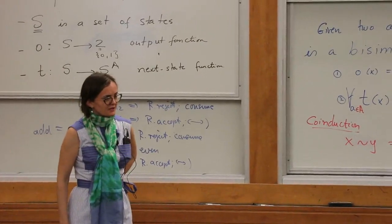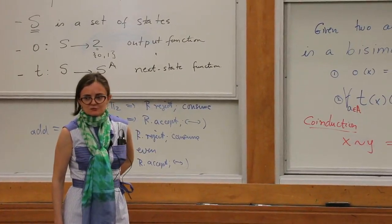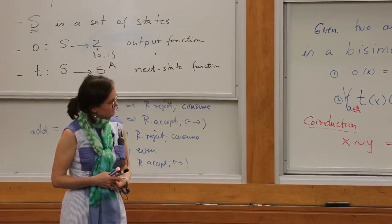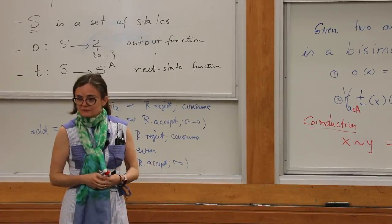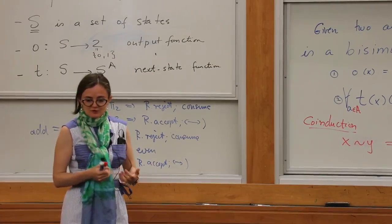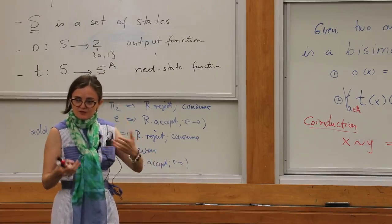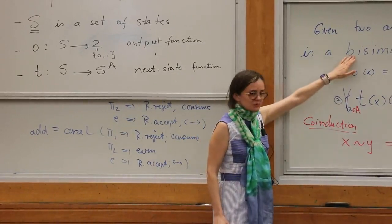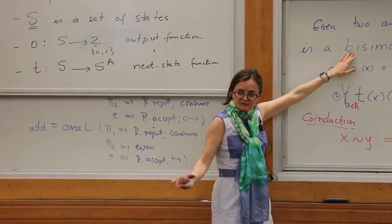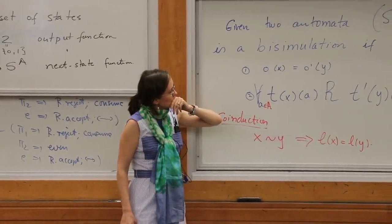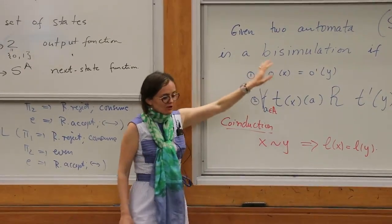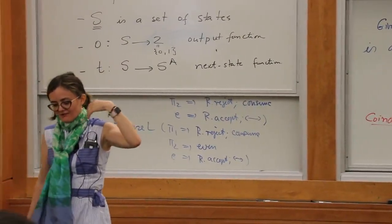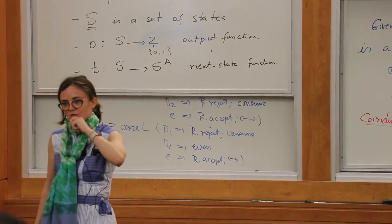The term 'bisimulation' goes back to Milner. One way two processes can be equivalent is if you have two simulations, one in each direction, and I think that's how the word 'bisimulation' came about — though this is my guess. For many types but not all, a bisimulation is equivalent to having simulations in both directions, but that's not always the case.